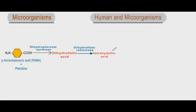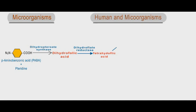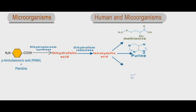In both humans and bacteria, folic acid is reduced by dihydrofolate reductase to tetrahydrofolic acid, which is used in the synthesis of amino acids such as methionine, nitrogen bases such as purines, or nucleosides such as thymidine. All these compounds are precursors for DNA and RNA synthesis.